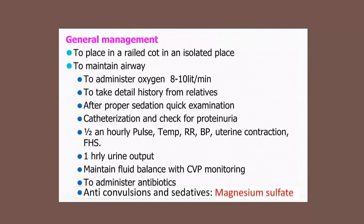In the hospital, place the mother in a railed cot in an isolated area. Maintain the airway by inserting an oropharyngeal airway and administer oxygen at 4 to 6 liters per minute. Take a detailed history from relatives, sedate the patient, perform a quick examination, and catheterize to monitor proteinuria and urine output. Check temperature, pulse, blood pressure, urine concentration, and fetal heart rate every 30 minutes. Monitor urine output hourly, maintain fluid balance with CVP monitoring, and administer antibiotics.